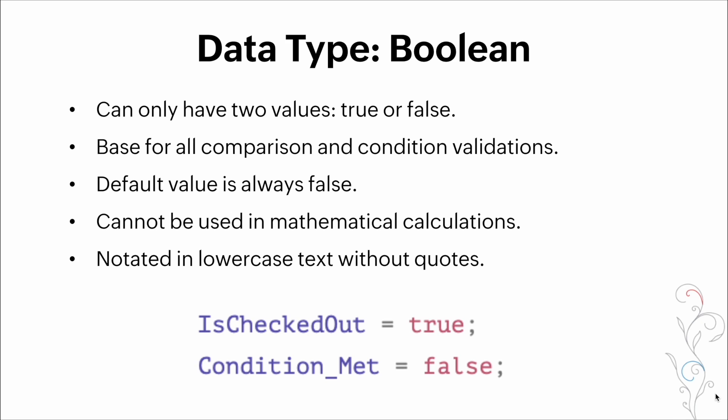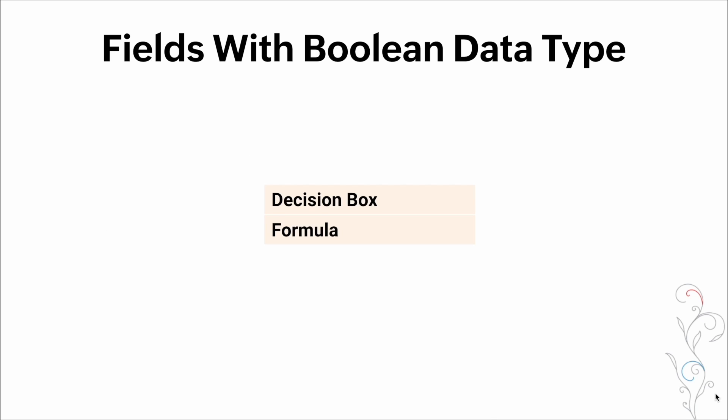Now another data type would be the boolean data type. These data types can only have two values: true or false. These are the basis for all comparison and condition validations. Its default value is always false. Cannot be used in a mathematical calculation and its value is always notated in lowercase text without any quotes. Some fields with the boolean data type are decision boxes and formulas.